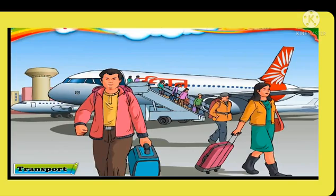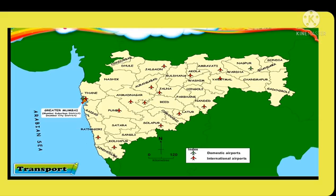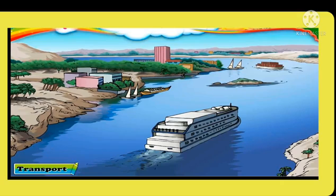Airways are useful for reaching places within a short span of time. Air transportation within the country is carried out from domestic airports, while transportation between countries is carried out from international airports.